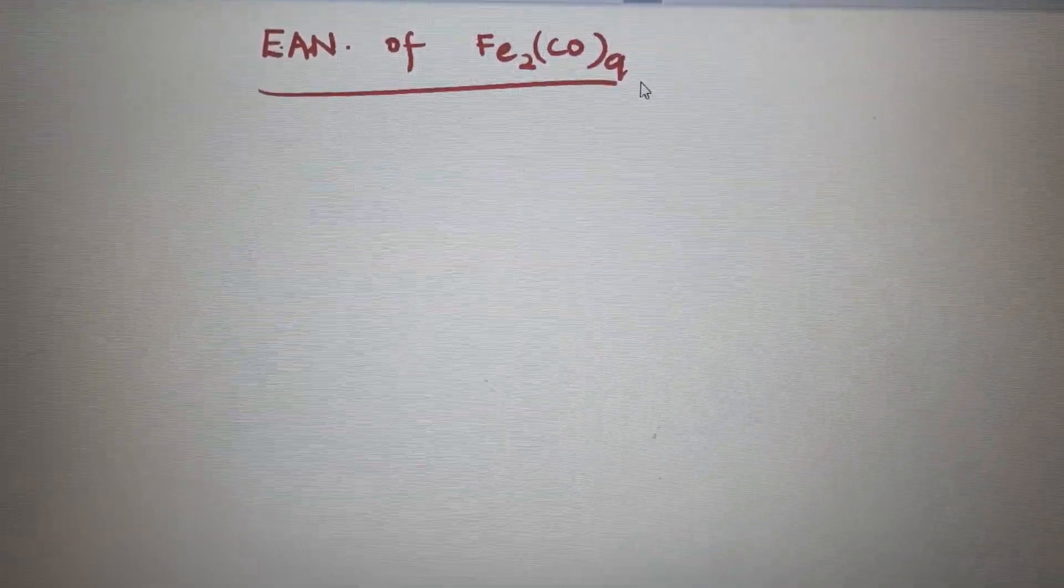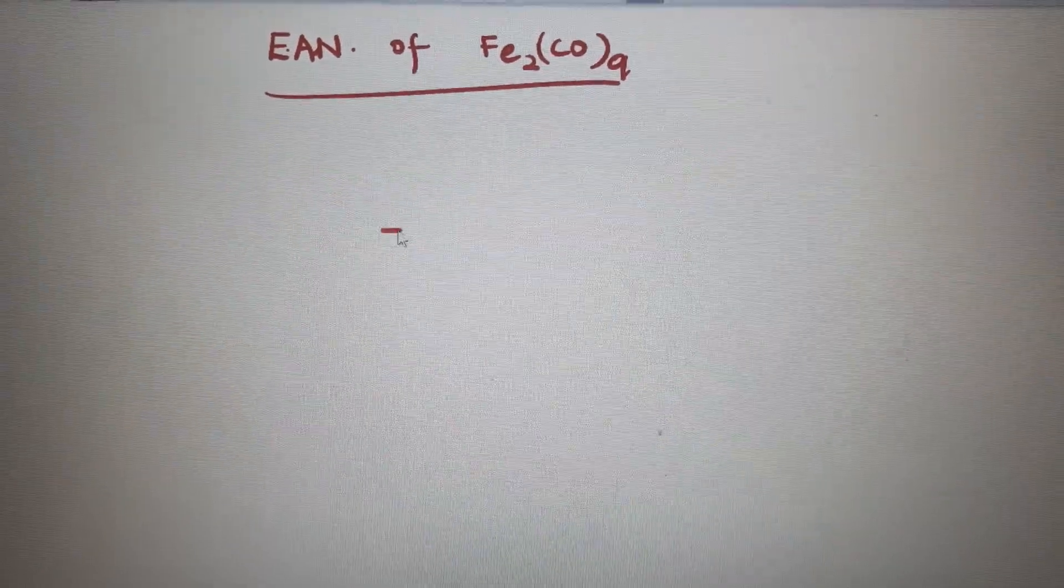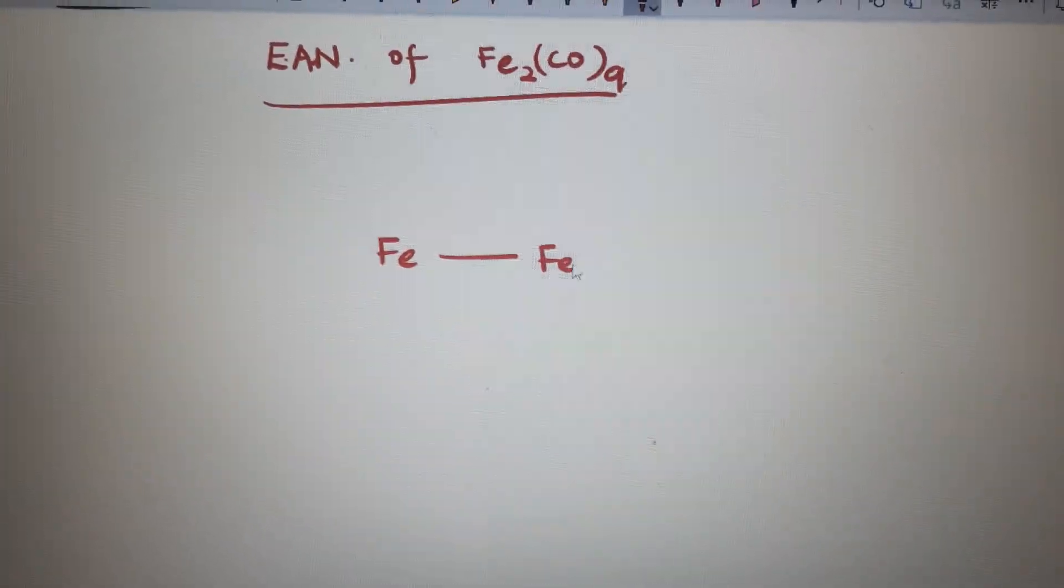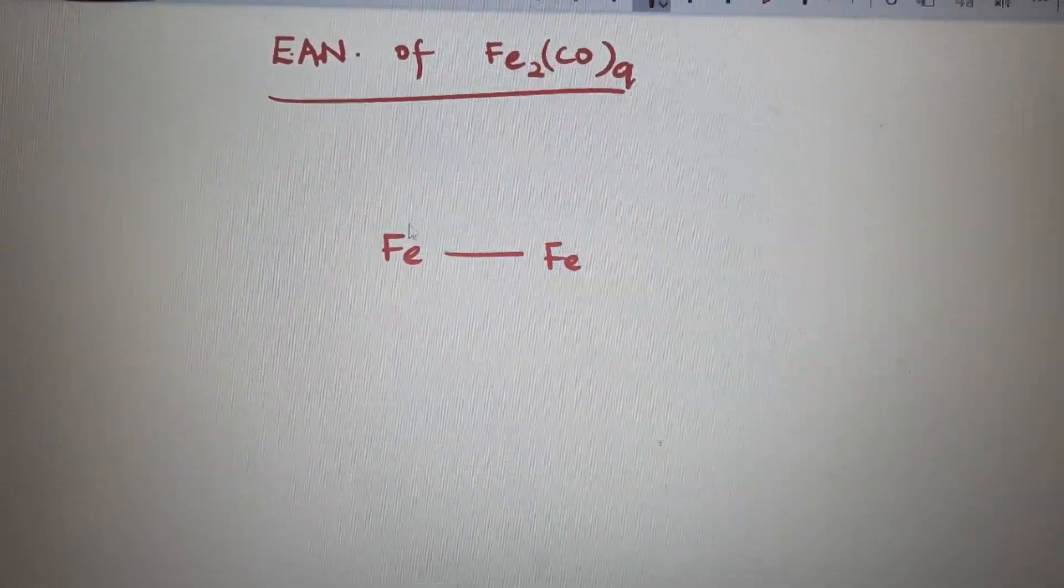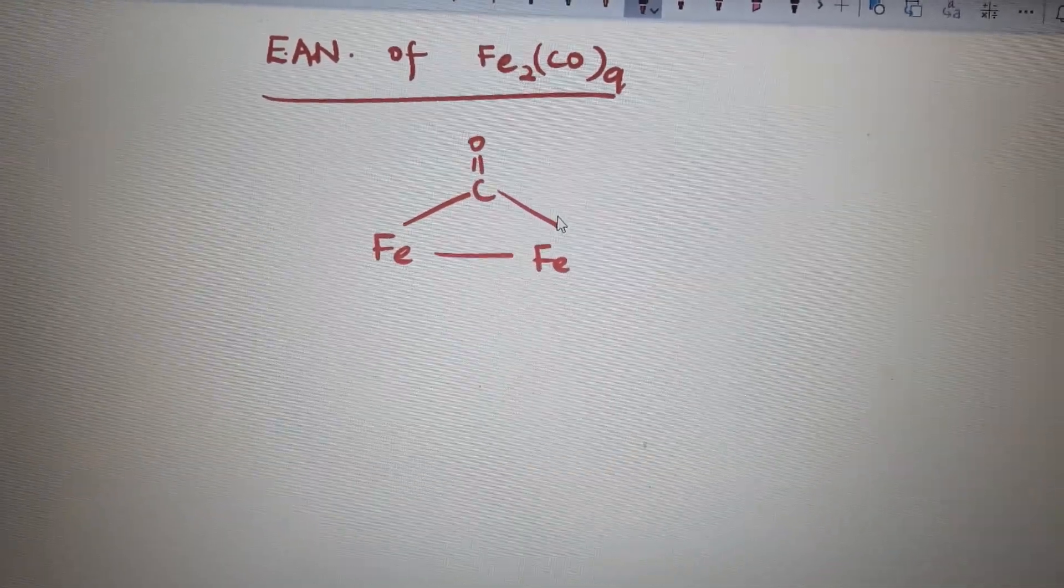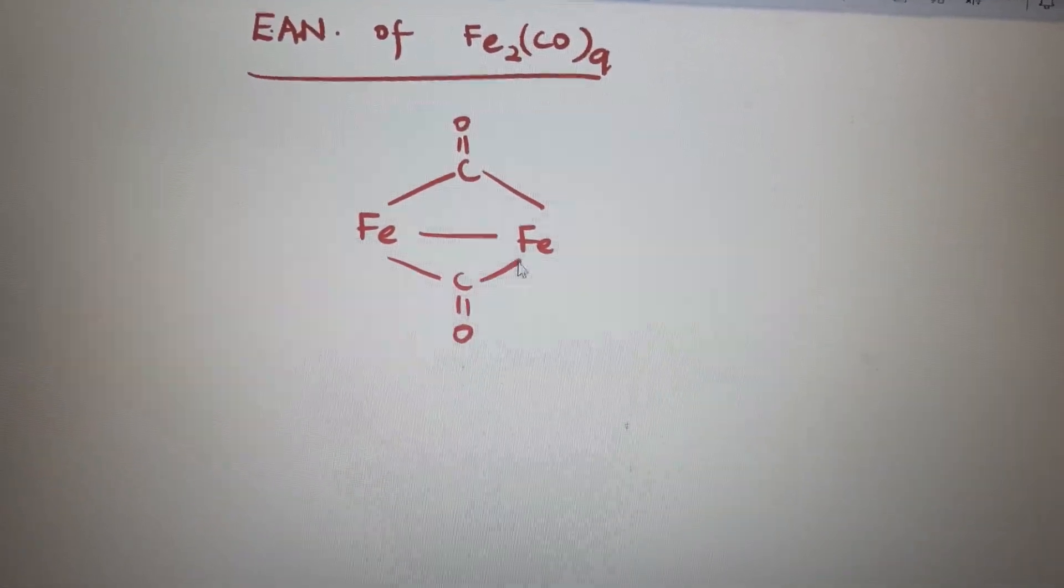EAN of iron in Fe₂(CO)₉. So both Fe here are connected with a metallic bond, one metal-metal bond there, and three bridged ligands are there.